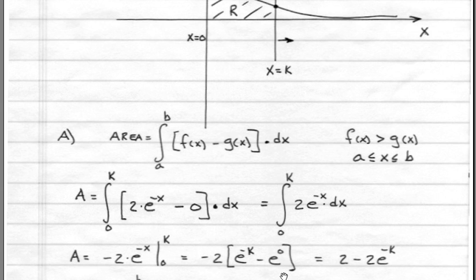E to the 0, anything to the 0 power is 1, so we get the following result. The area of region R is 2 minus 2 times e to the minus k. So that's the first portion of the solution.